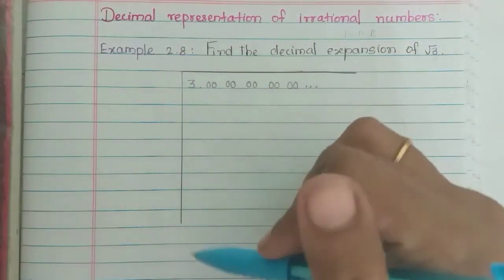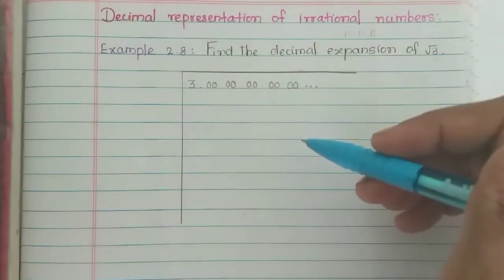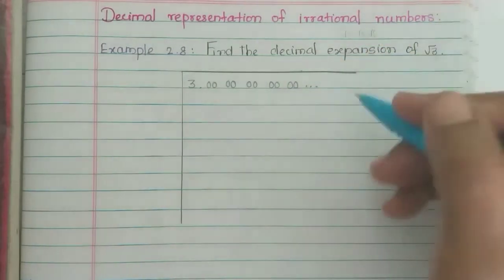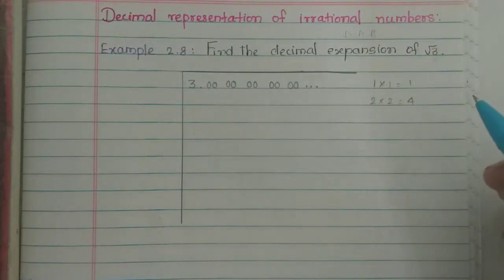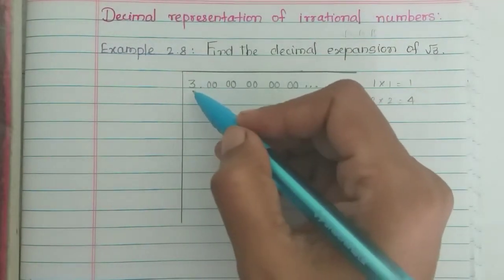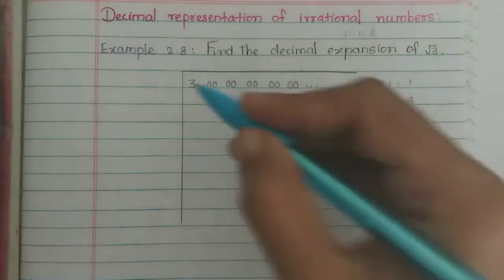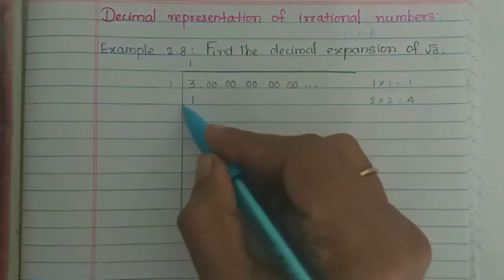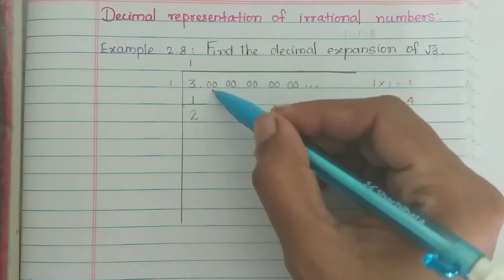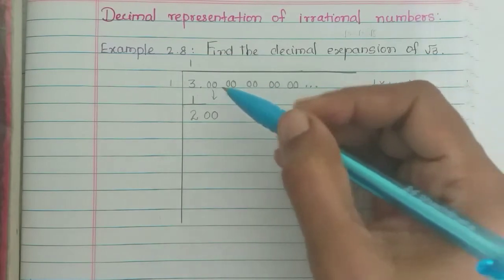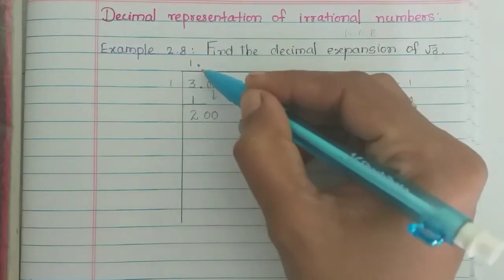How do we divide? If you want to divide the square root, we can divide by square numbers. First, we have to identify the square number. What square numbers are there? 2 twos are 4; 4 is greater than 3. So 1 one is 1, and 1 one is 1. So what happens here: 3 minus 1 equals 2. If you want to divide the square number — the square number is 1, and then you have to proceed with the division.